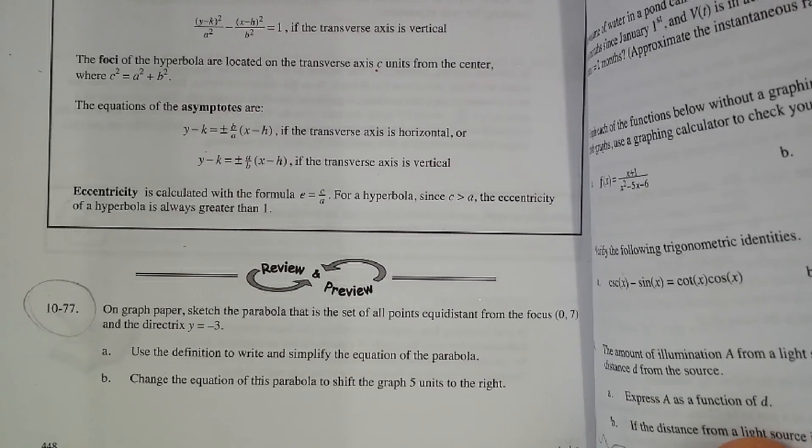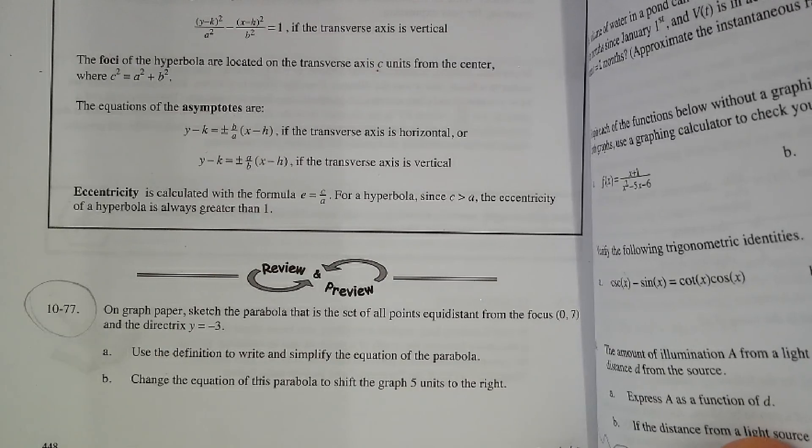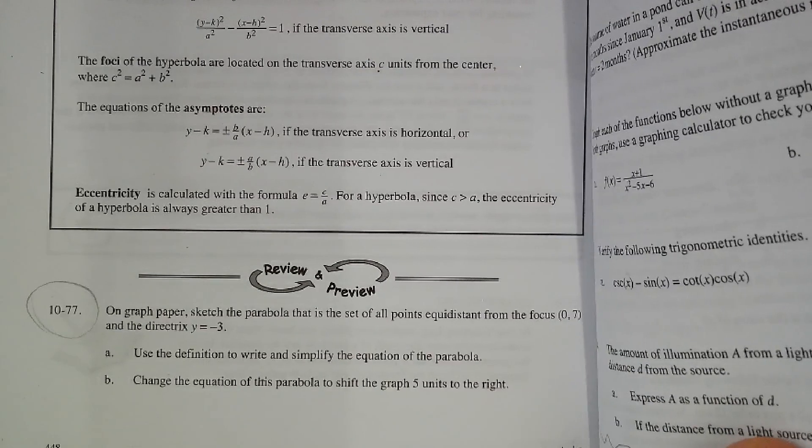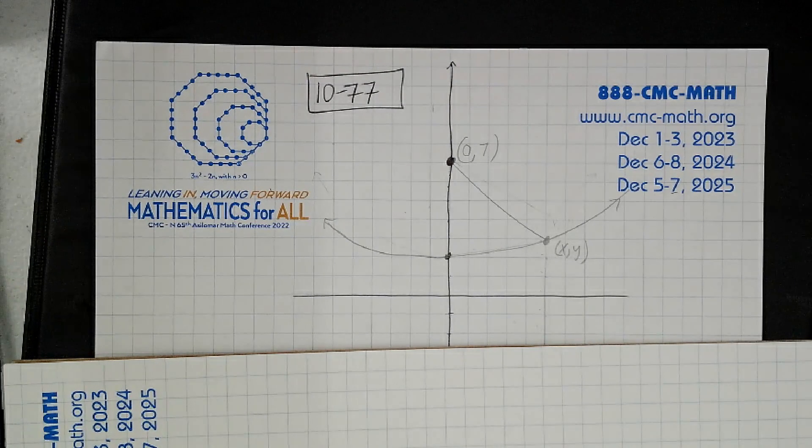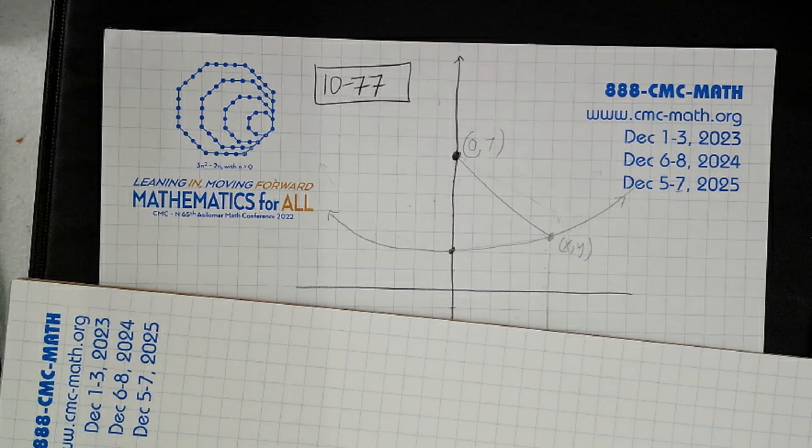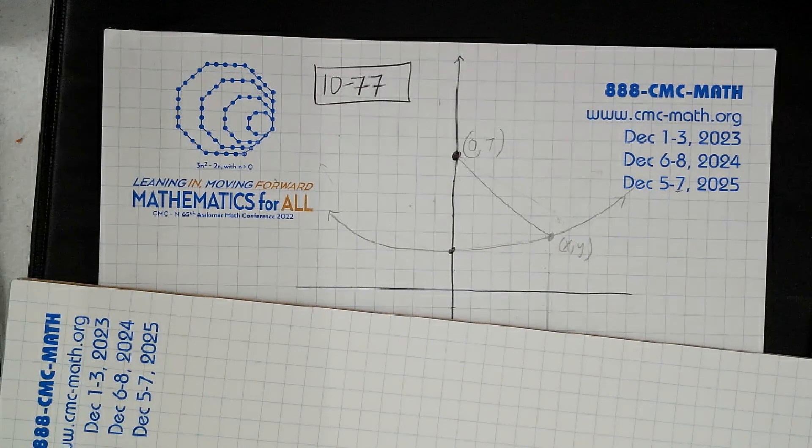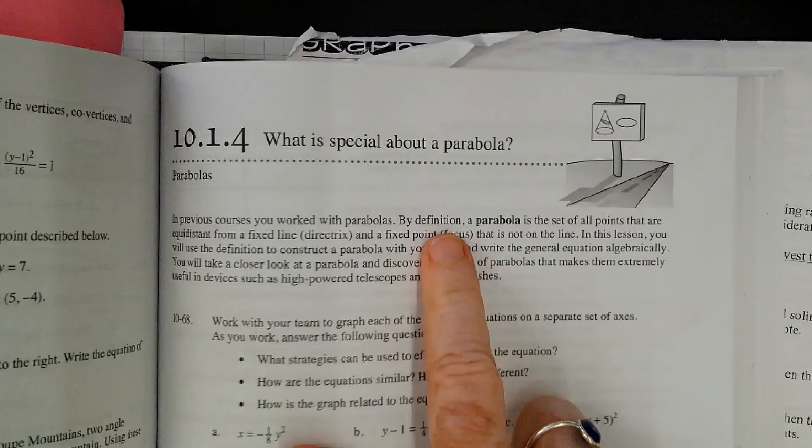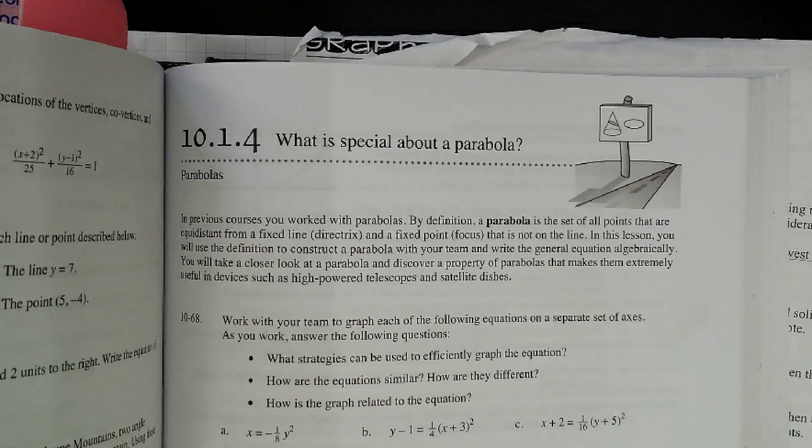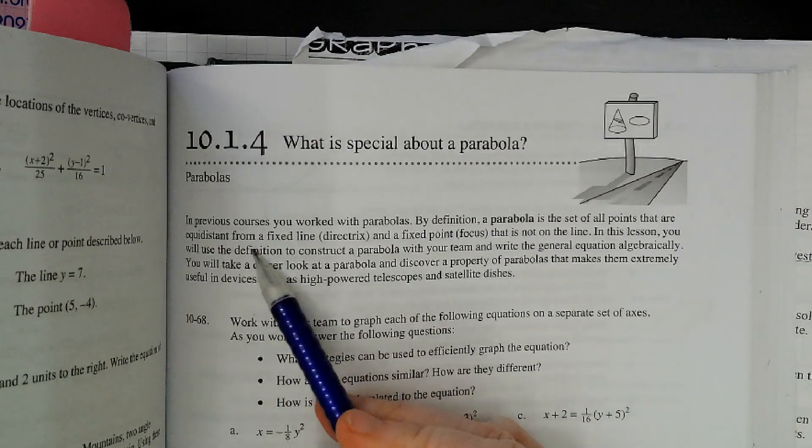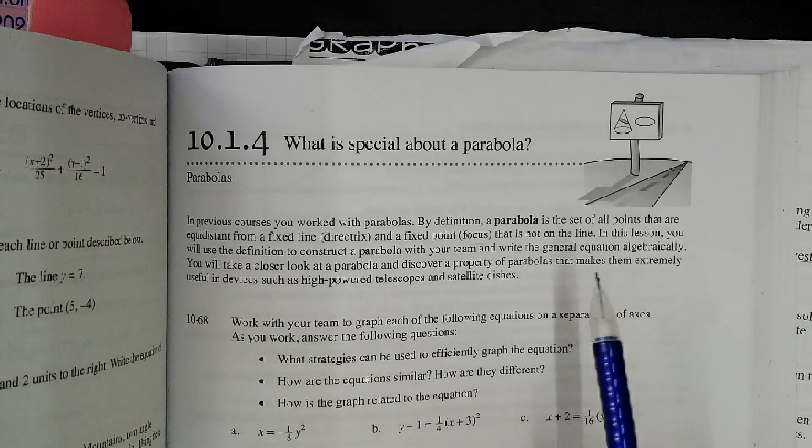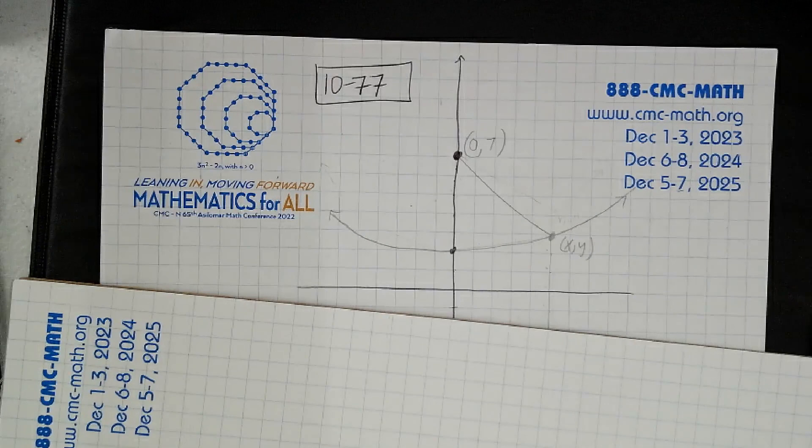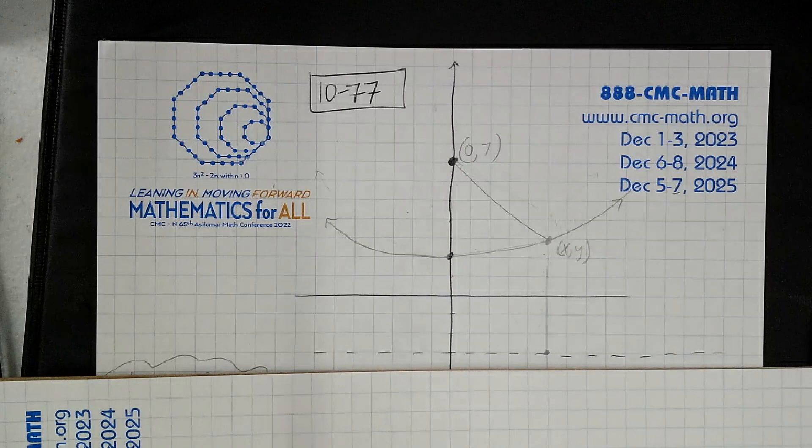You have not been told this all these years, but the definition of a parabola, let me read it to you. By definition, a parabola is the set of all points that are equidistant from a fixed line, which is a directrix, and a fixed point, which is the focus that's not on the line. That's a simple definition.